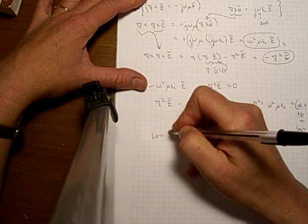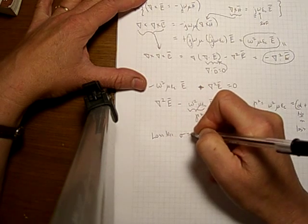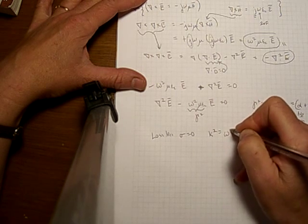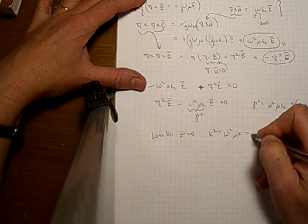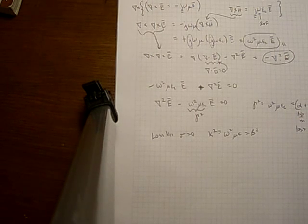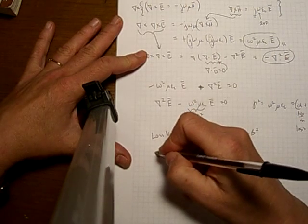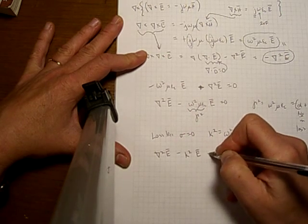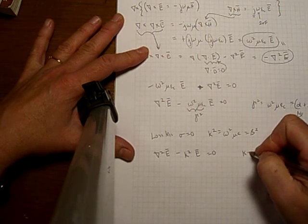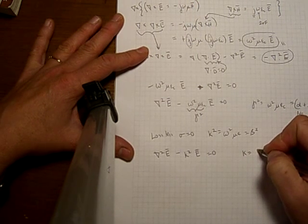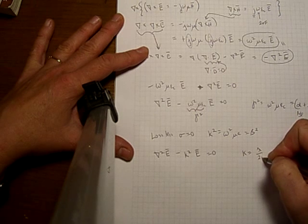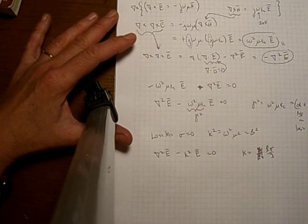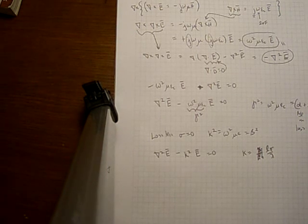In the event that this media is lossless, that means that the conductivity is equal to zero. Then we can say that k squared is omega squared mu epsilon and that that is equal to beta squared. That only happens in a lossless environment. But then the Laplacian electric field minus k squared times the electric field is equal to zero. K in this case is also equal to 2 pi divided by the wavelength just like beta was. So this should be a familiar form.